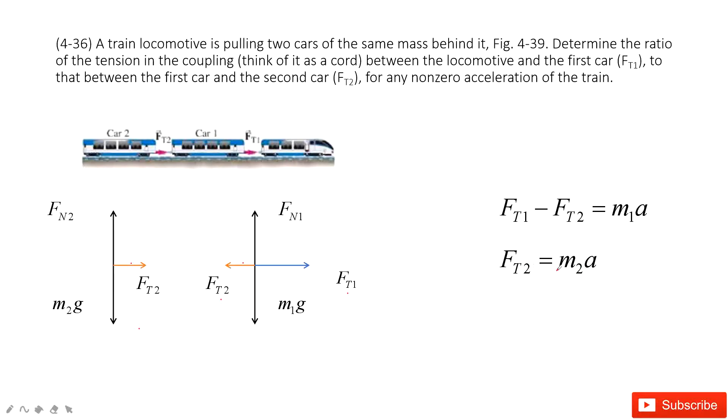In this one, we can see FT2 is M2 times acceleration. And in this there, it tells us these are the same mass. The same mass.